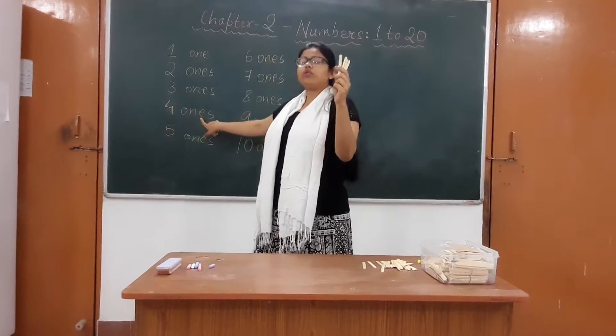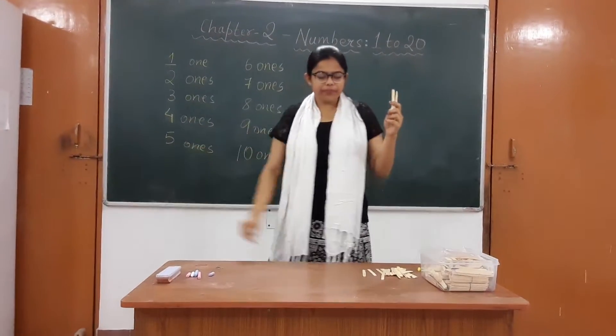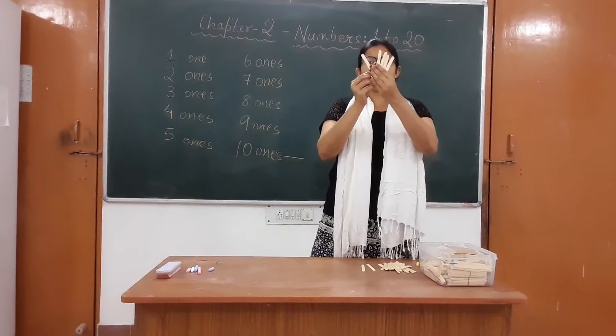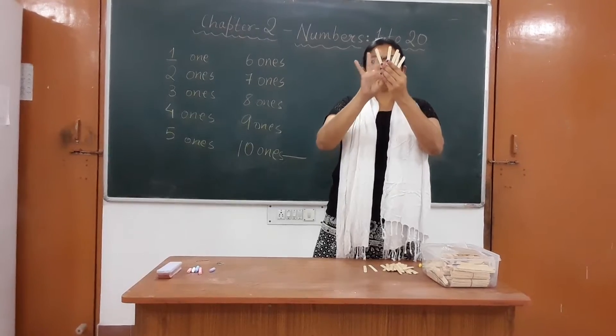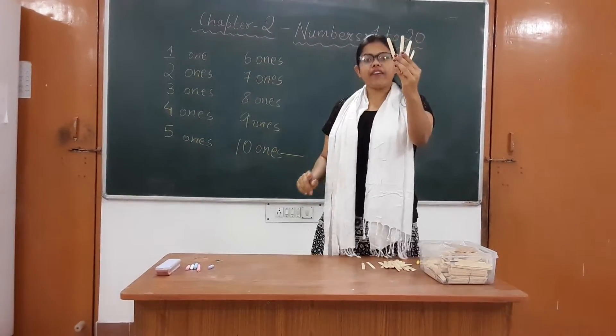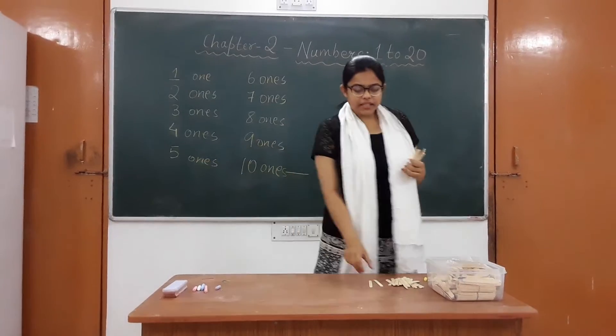Now, 4. So, I will call it 4-ones. Now, how many? See — 1, 2, 3, 4, 5. That is 5 ice cream sticks. That means 5-ones.